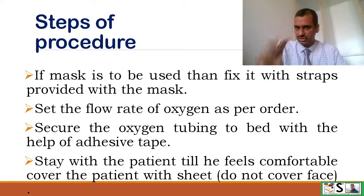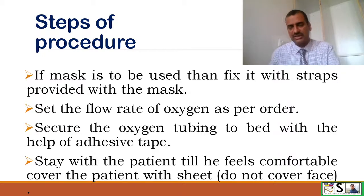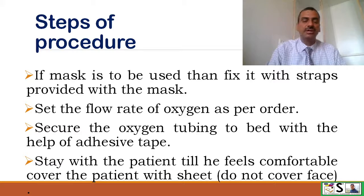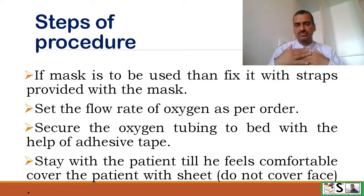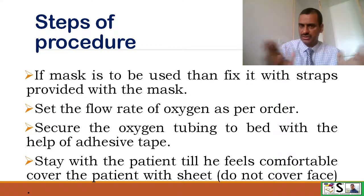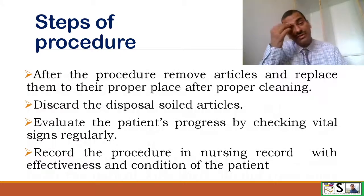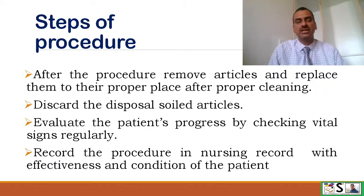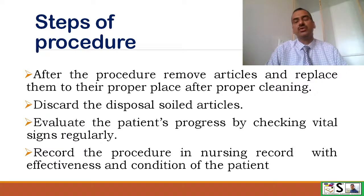Secure the oxygen tubing with plasters to the bed so it is not kinked or pulled accidentally. Then start the oxygen and check the flow rate — it should be as per the physician's order. Stay with the client until they feel comfortable, and cover the patient up to chest level without covering the mouth so you can continuously observe the placement of the mask or cannula. After the procedure, remove all articles, replace them to their proper place after proper cleaning, and discard disposable soiled articles. Evaluate the client's progress by checking vital signs regularly and record the procedure in the nursing record with effectiveness and the present condition of the client.